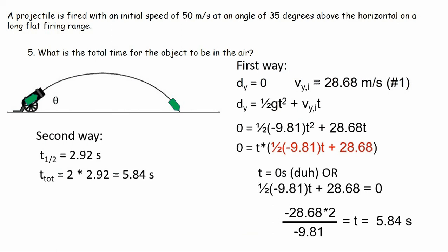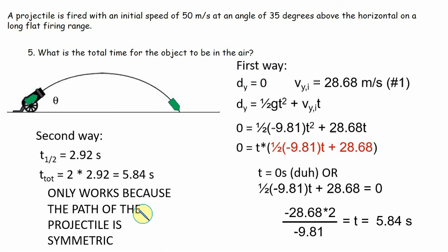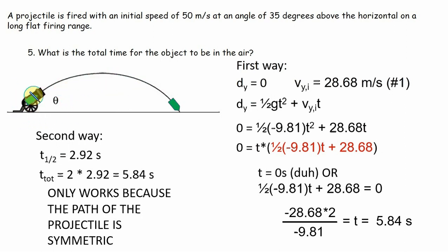You have to be careful — method two only works because the path is symmetric, meaning the projectile lands at the same y level it started. If the landing point were at a different height, the displacement in y would not be zero and it would not take the same time going down as going up. So you must know how to do the first method; you can't always rely on the symmetry trick. Problems six through ten will be covered in the second part of the video.